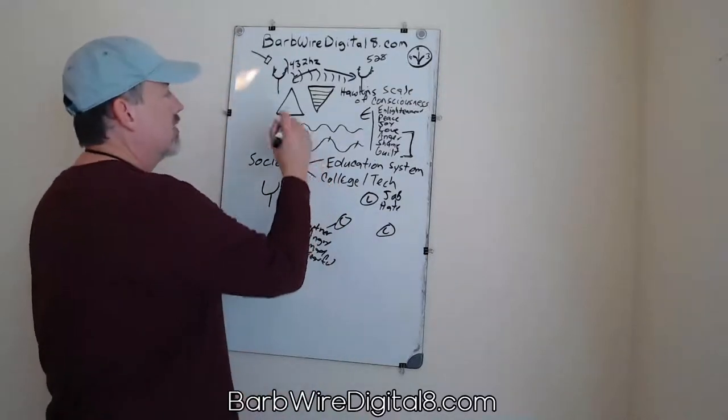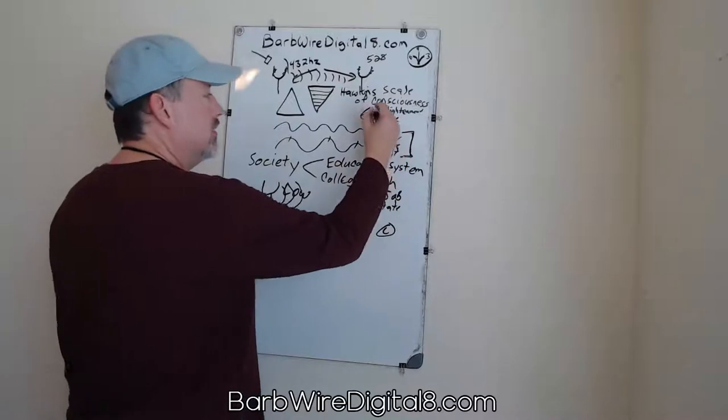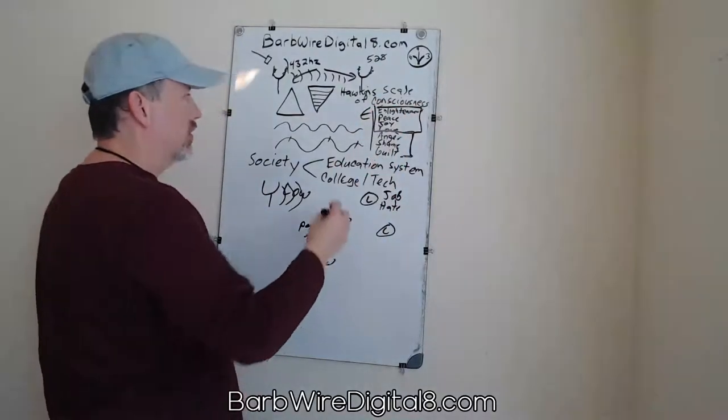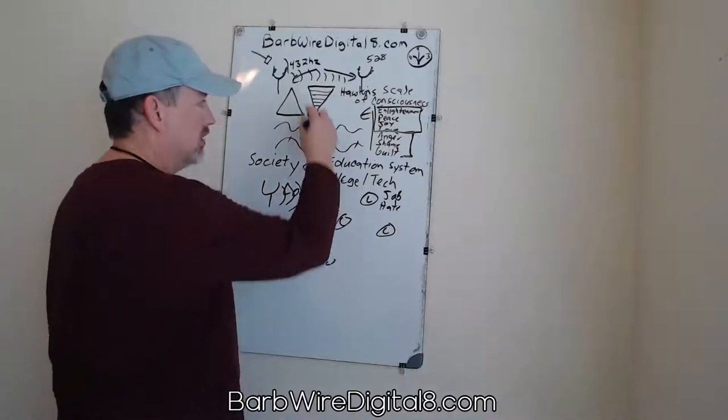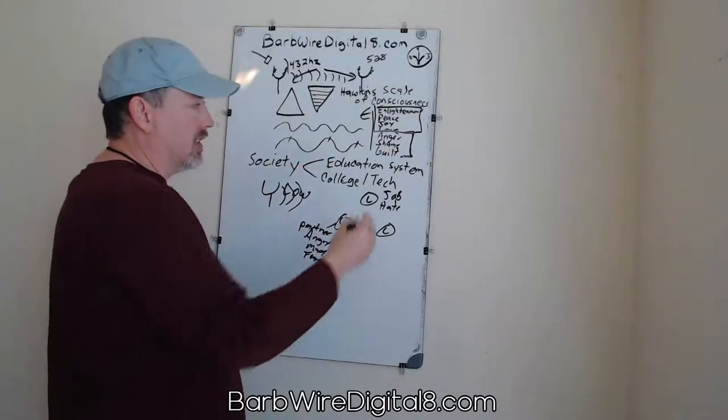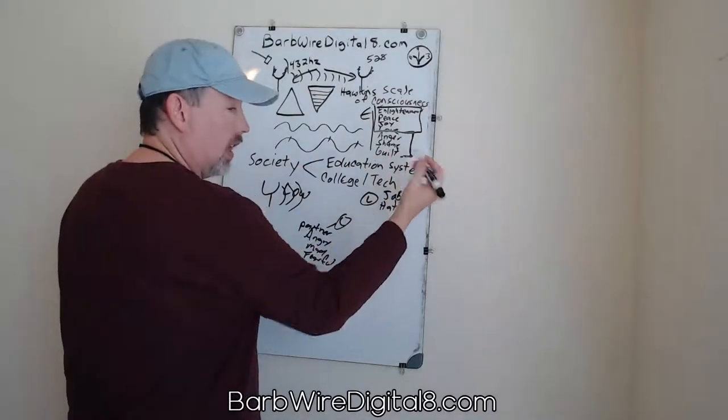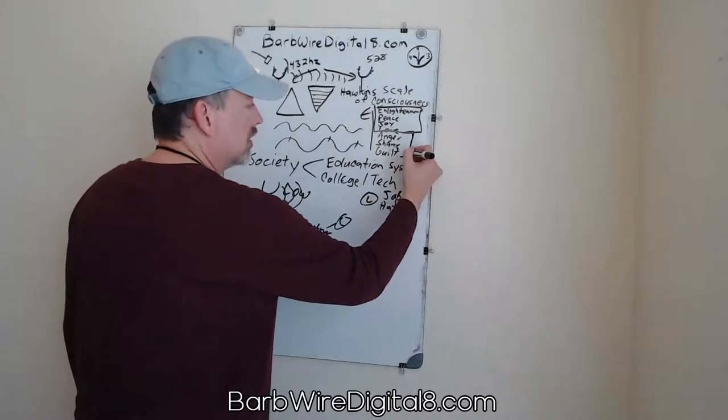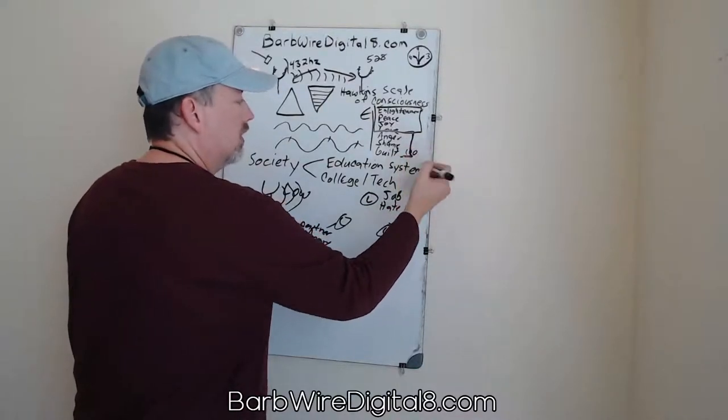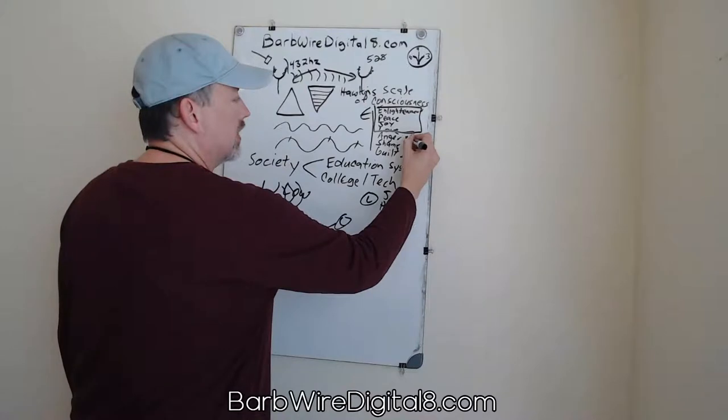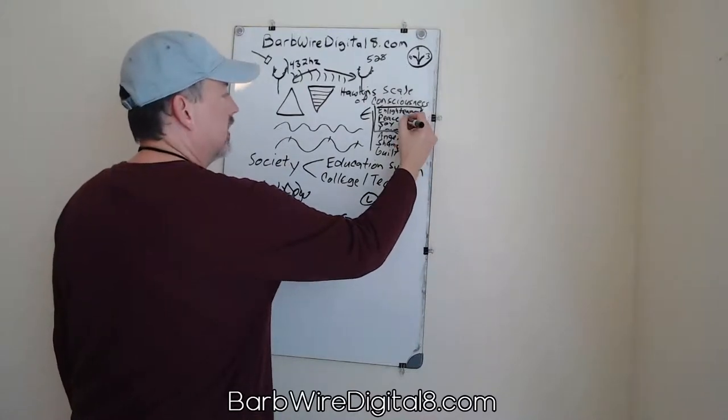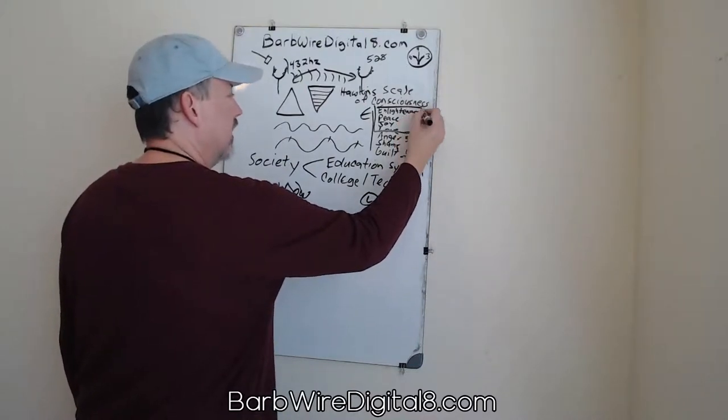So here's the thing. You want to get into the top vibrations. You can do a Google search and find this Hawkins scale of consciousness pyramid. Basically each emotion, I don't know what they are, you can look them up. Let's say this one's like 100 hertz and this one's like 300, and then you get up here, I think peace and enlightenment is like 800.